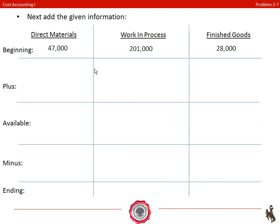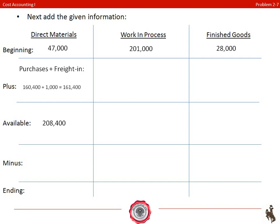We have beginning inventories in all three of these accounts: 47,000, 201,000, and 28,000. Our next step is to add in our purchases and freight in to our direct materials — that's the direct materials we purchased and the freight along with it, totaling 161,400. If we add that to our beginning direct materials balance, we get an available amount of 208,400. We subtract out the direct materials used of 191,400, leaving us with an ending direct materials inventory of 17,000.